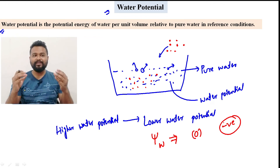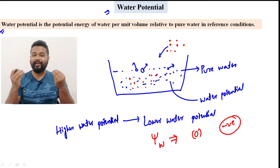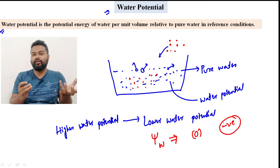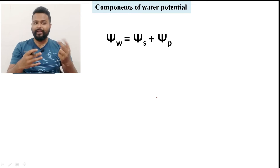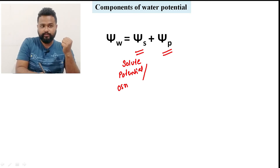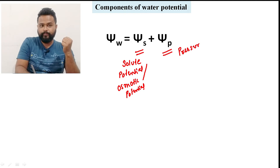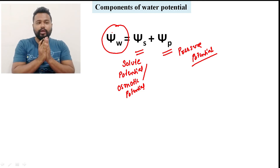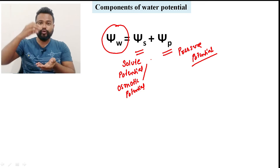So this is just the basic concept of water potential. Water potential is a sum of key components. The two main components that affect water potential are ψs, which means solute potential — also called osmotic potential — and ψp, which means pressure potential.